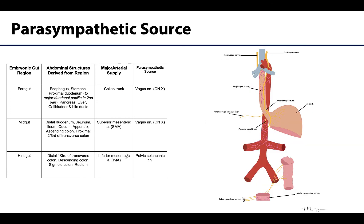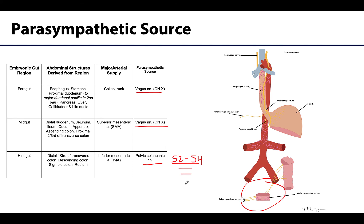Parasympathetic innervation is important in the abdominal region. The foregut and midgut receive parasympathetic innervation from the cranial source — the vagus nerve. However, once it reaches the end of the midgut, the vagus nerve's journey is finished. The hindgut is parasympathetically innervated by the sacral component of the parasympathetic system — the pelvic splanchnic nerves, derived from spinal cord levels S2 through S4. Those fibers reach this area via autonomic plexuses, which will be discussed in upcoming videos.